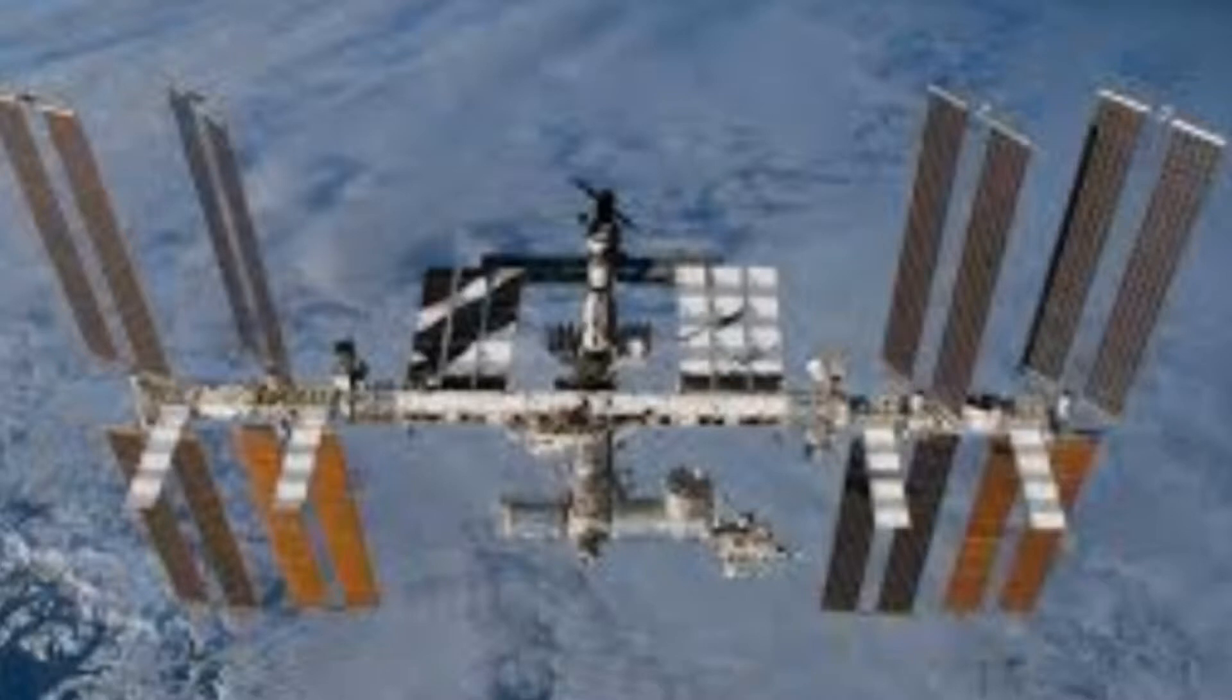On Earth, our atmosphere provides protection from UV rays, asteroids, solar radiation and other space debris, as well as hold our oxygen.